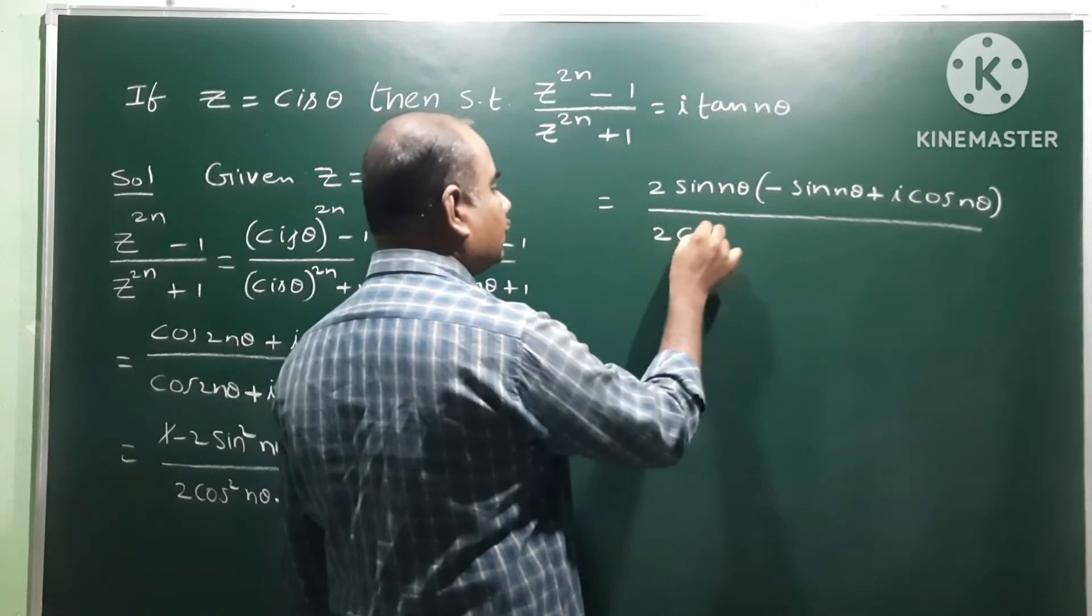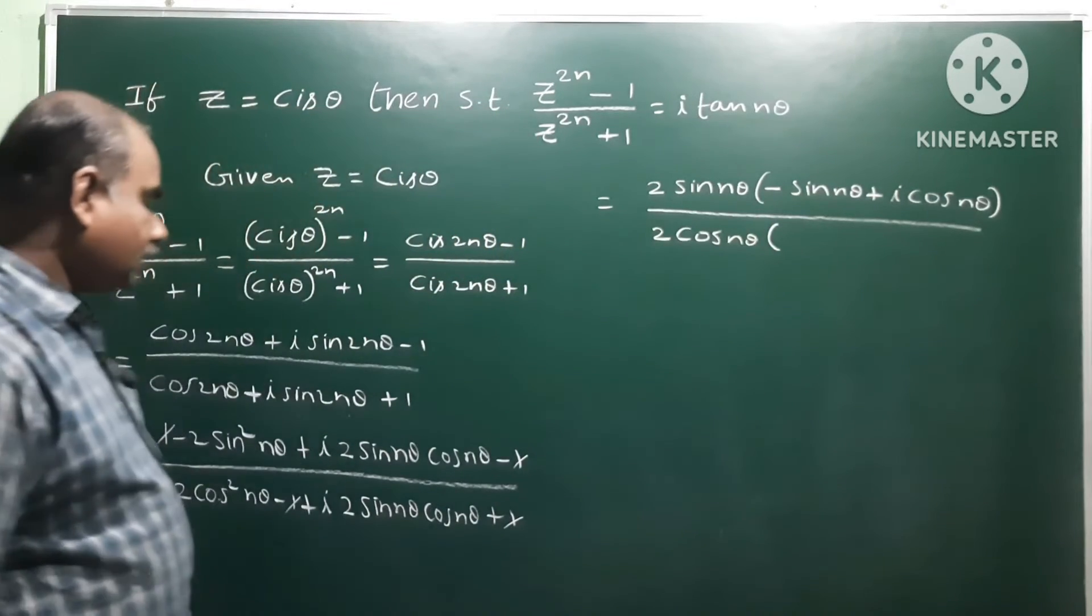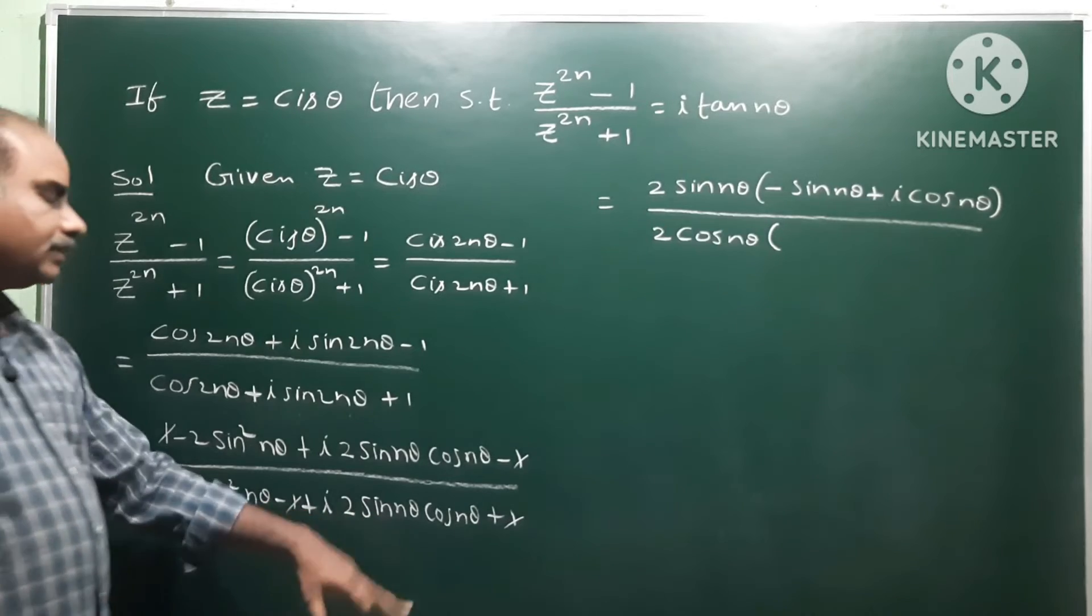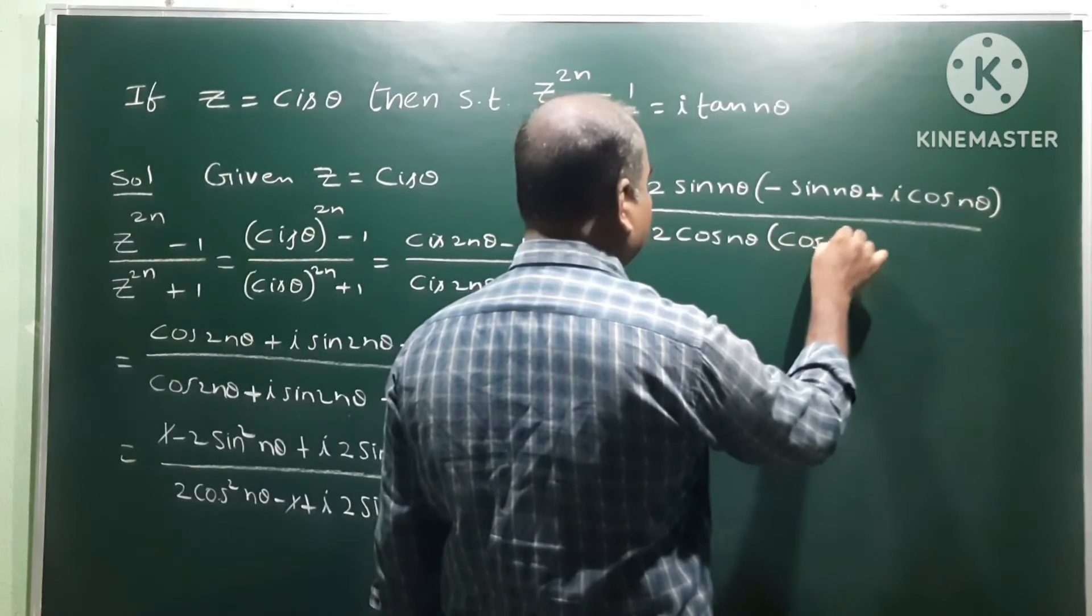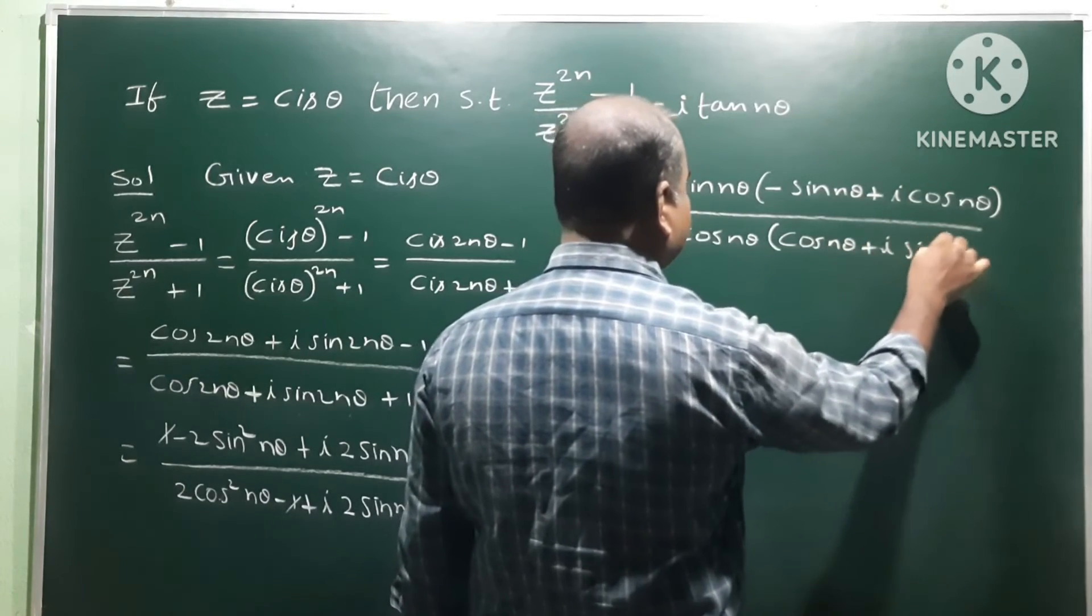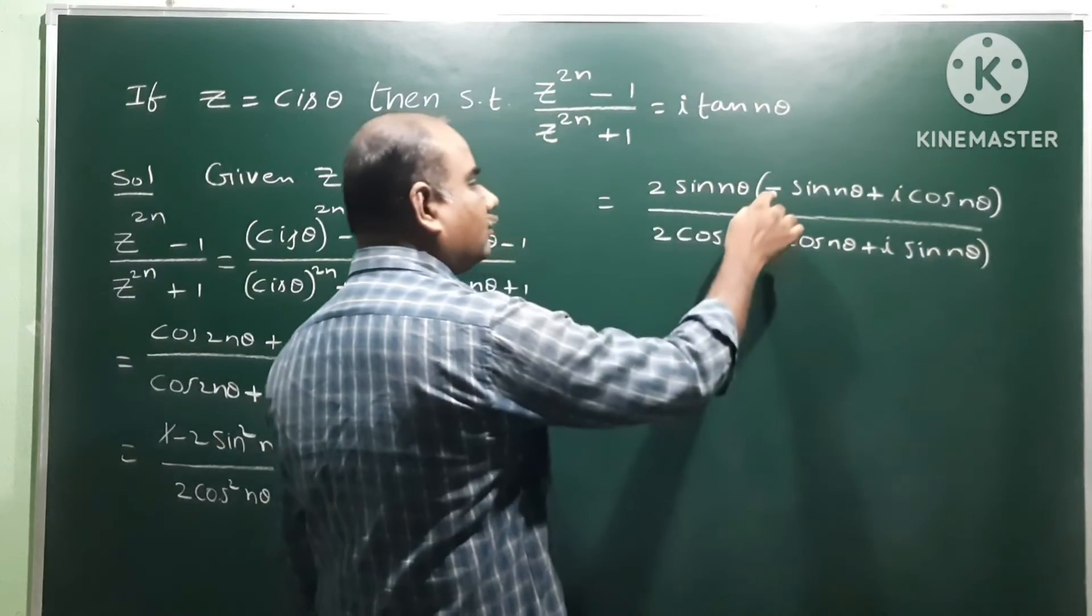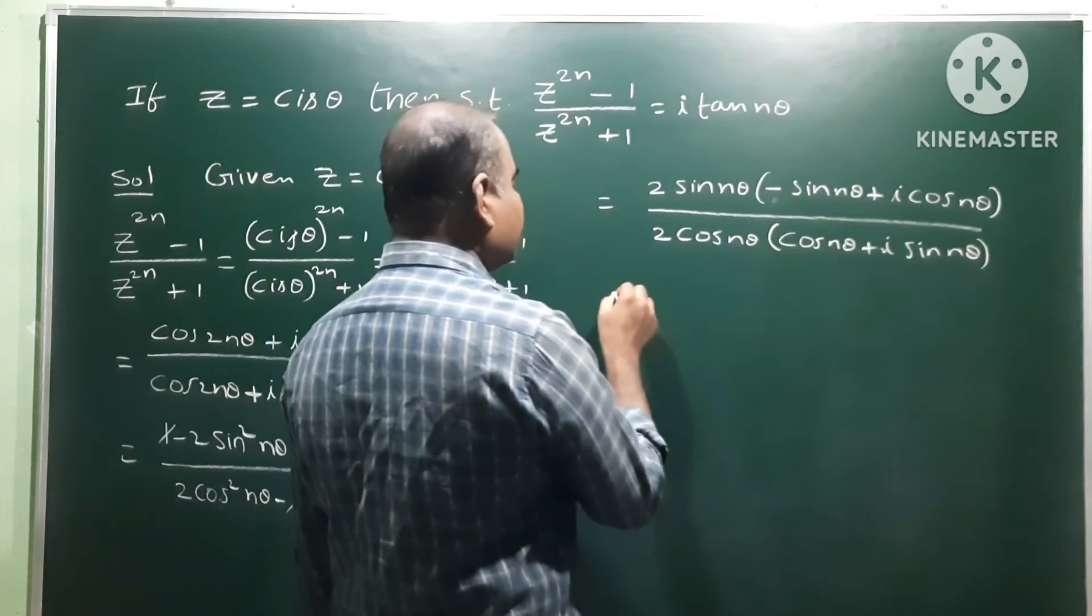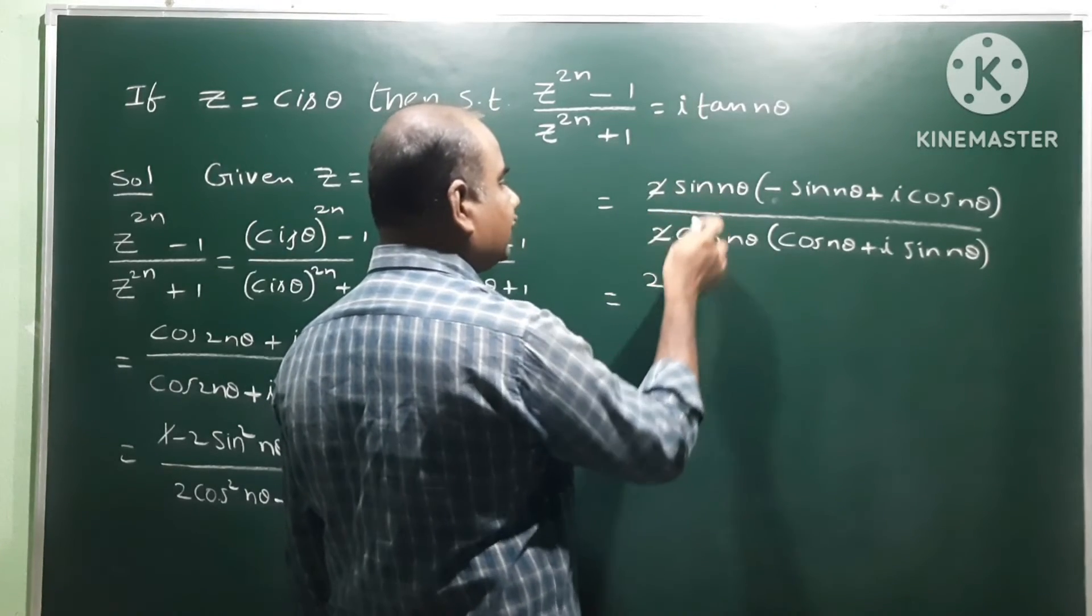So 2cos nθ as common. Minus minus becomes plus 1, cancel out. Sin by cos is tan nθ. So minus cancel out: sin nθ plus i cos nθ